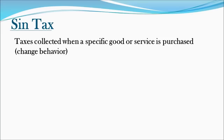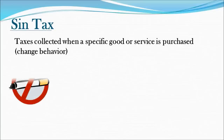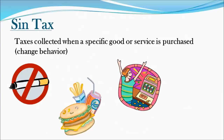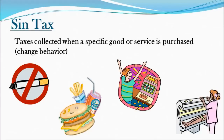Sin taxes are levied on activities the government considers unhealthy. The tax is meant to discourage the activity and to pay for government healthcare costs associated with it. Examples include taxes on tobacco products, fast food in some cities, gambling in some states, and the indoor tanning tax. Keep in mind these differ from state to state and sometimes even city to city.